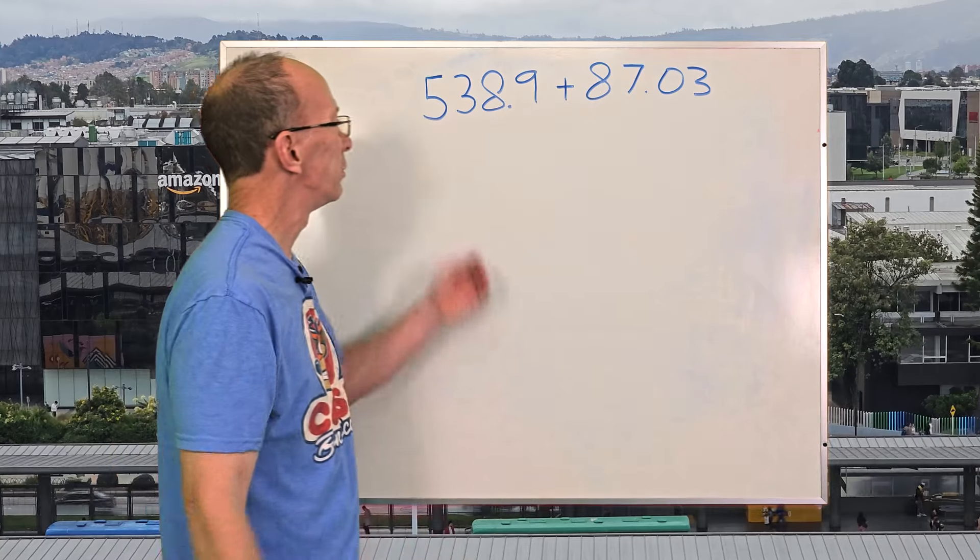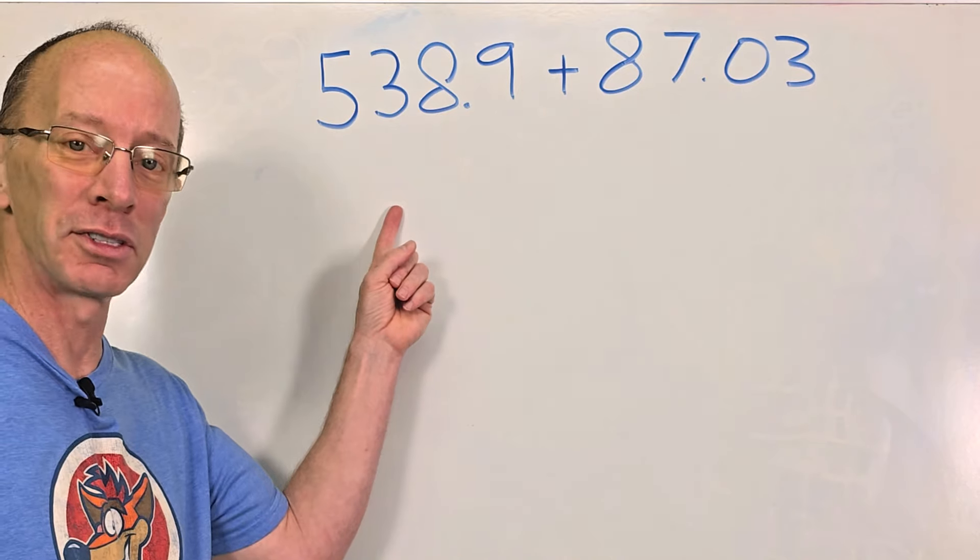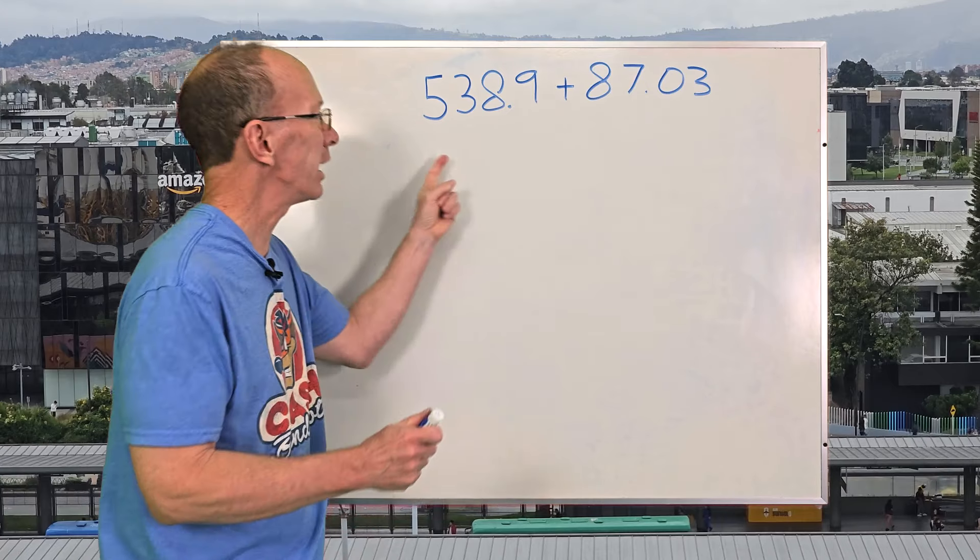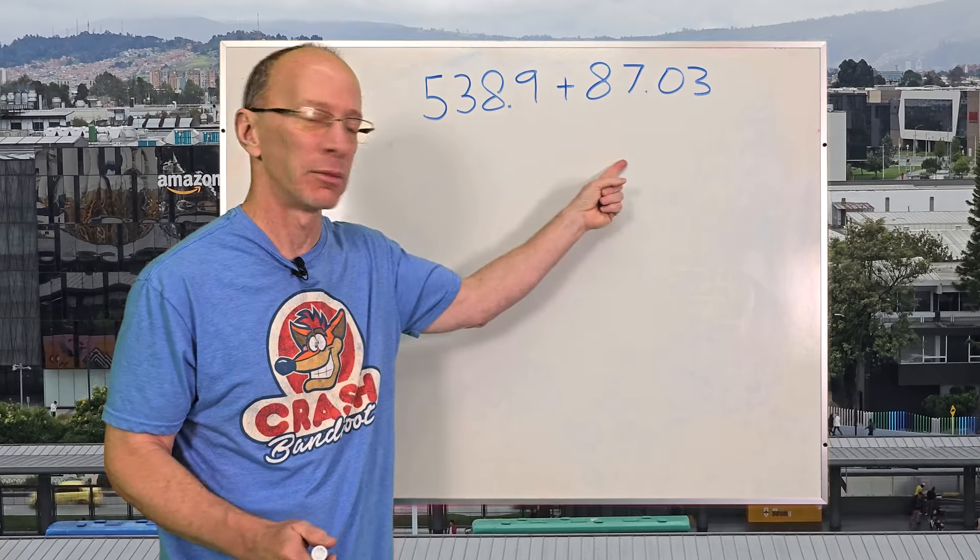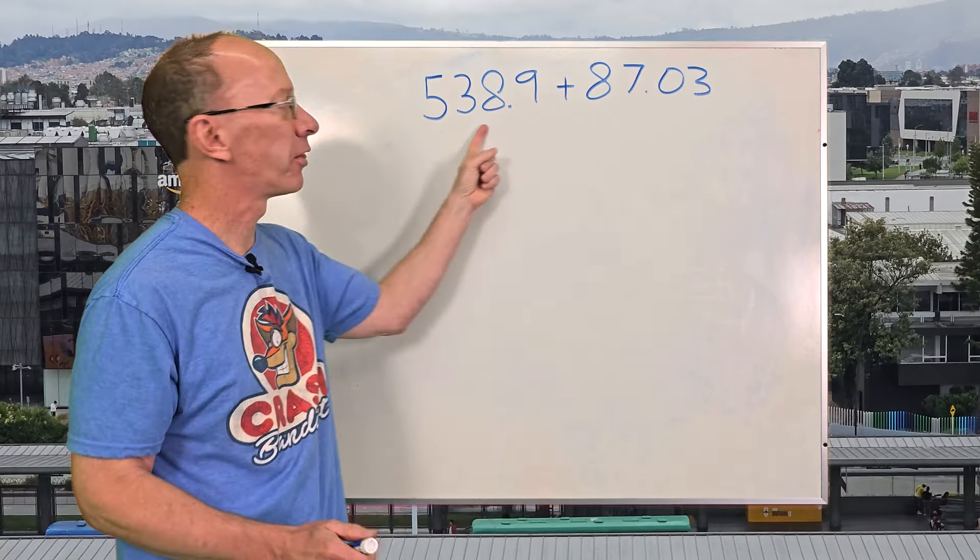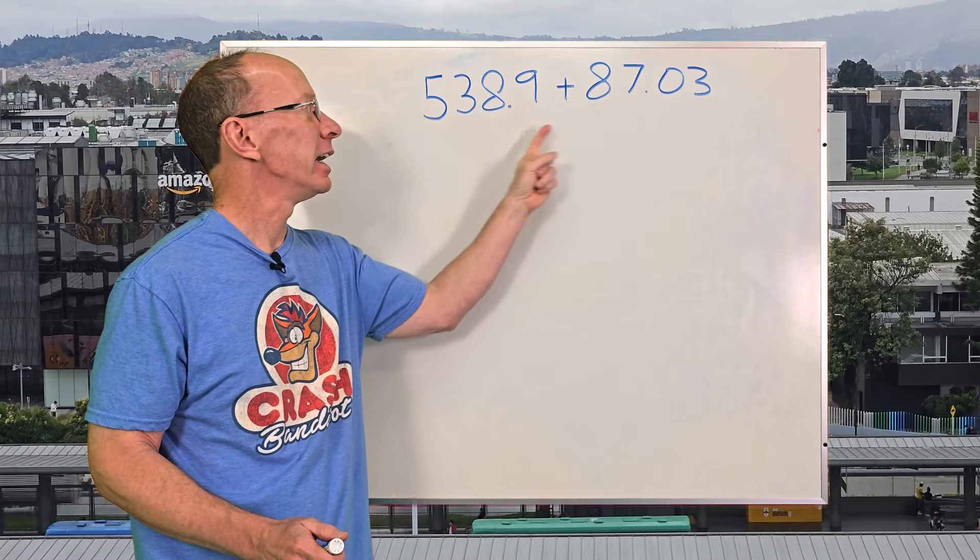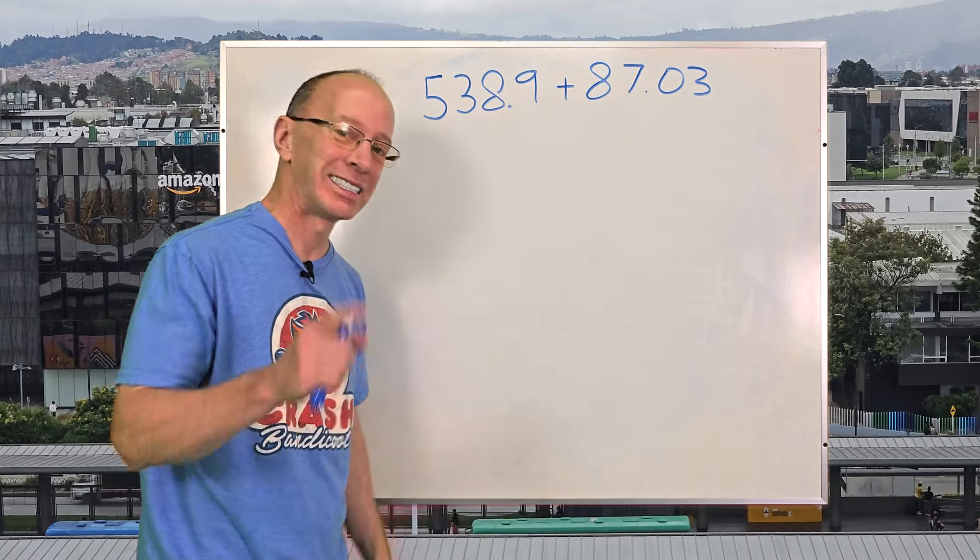Hey, welcome to the show. Today on the show we're going to be adding decimals. That's right, we're going to be adding decimals. We're going to rewrite this problem right here. I have 538.9 plus 87.03.